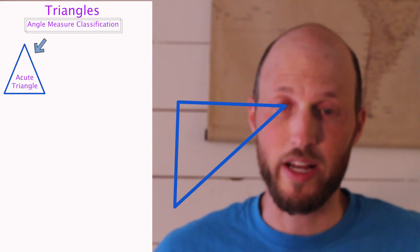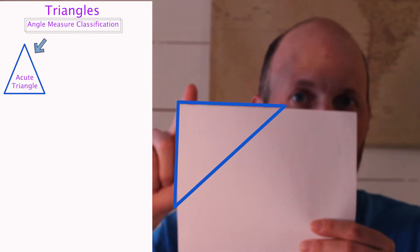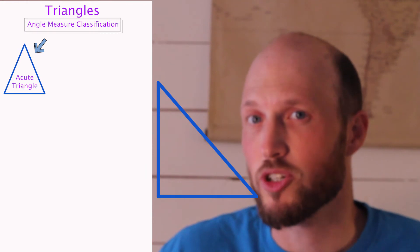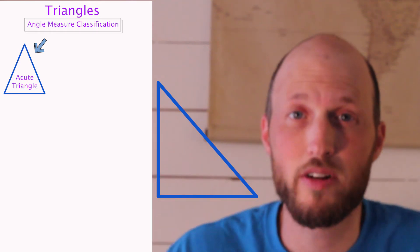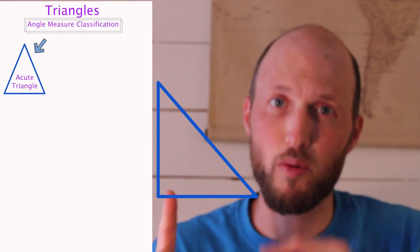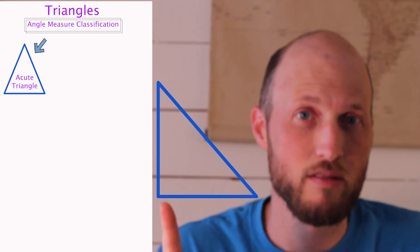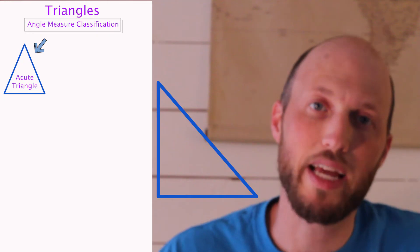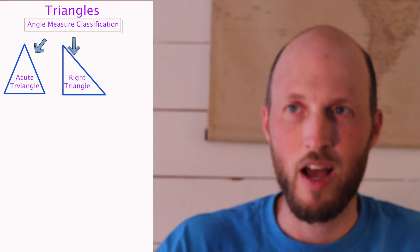Next we have the right triangle. We're gonna look at the edge of your paper — 90 degrees — and see if it fits in that triangle. If it matches exactly, it is exactly 90 degrees, which makes it a right triangle. Now all the interior angles of a triangle add up to 180 degrees. So if one angle is 90 degrees, the other two have to be 90 degrees together. That means you can't have more than one right angle — a right triangle has one right angle, and the other two are acute.